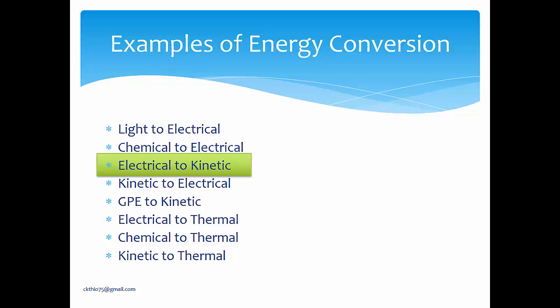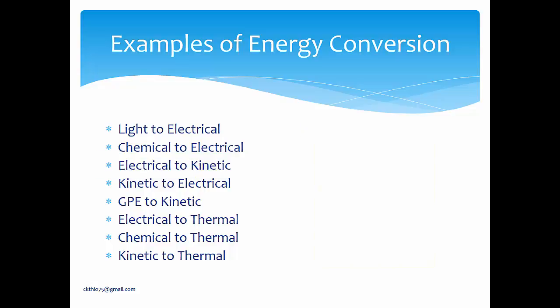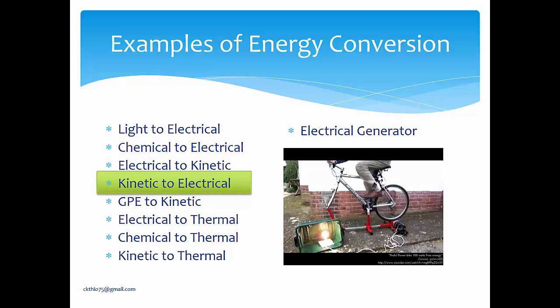Electrical to kinetic — something like a motor. Using this picture, it shows how electrical cells generate electricity and are used to turn things, which is kinetic energy. Kinetic to electrical — one example is an electrical generator. Generally, you use motion to generate electricity. This person is cycling using kinetic energy and generating electricity.